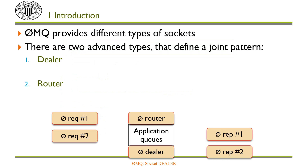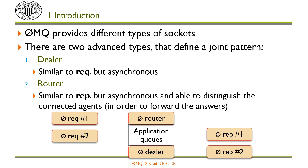0MQ provides different types of sockets, and there are two advanced types that define a joint pattern: dealer and router. Dealer is similar to the REQ socket, but it's asynchronous, so it's also bidirectional. And router is also similar to REQ, but asynchronous, and because of this, it should distinguish among the connected agents in order to forward the answers, since REP and router are mainly intended for servers.